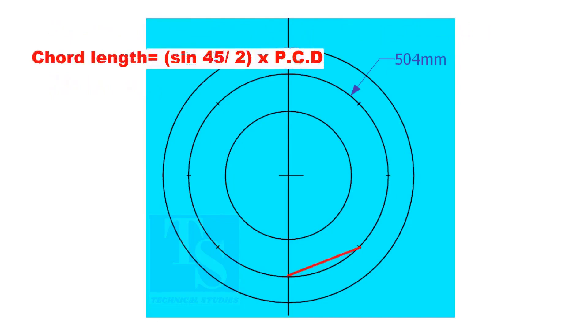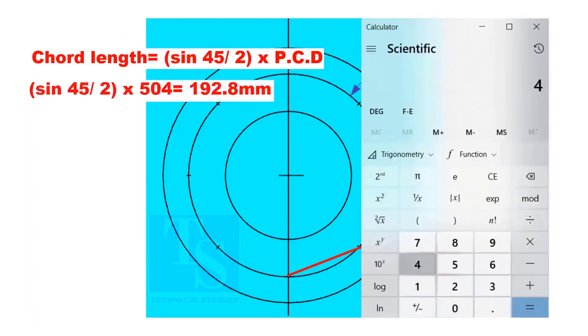Chord length equals sine 45 divided by 2, multiplied by PCD. The chord length is 192.8 millimeters.